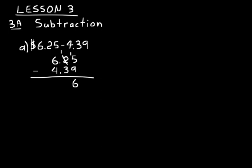Then we have 1 minus 3. We can't do that, so again we need to borrow. We borrow from the 6, make that a 5, and bring that 10 we borrowed over to the next column. Now we have 11 minus 3, which is 8. Put our decimal point. 5 minus 4 is 1. That gives us $1.86 — 1 dollar and 86 cents. That's our answer.